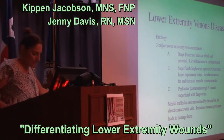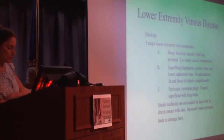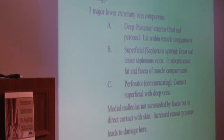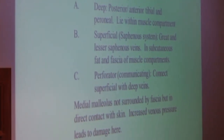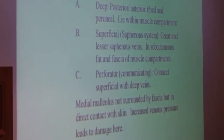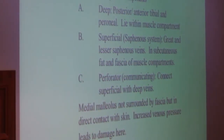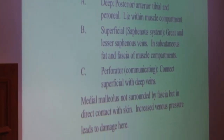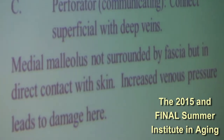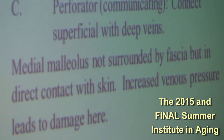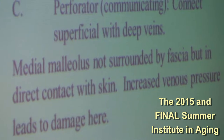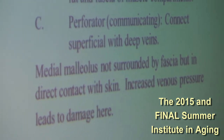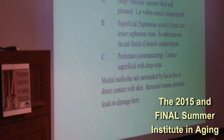The superficial or saphenous system, located within the subcutaneous tissues, collects from the skin and soft tissue, and this is a low pressure system. Then we have perforator or communicating veins — we have about 90 of these — and these connect the superficial and deep veins. Our typical venous ulceration occurs around the medial malleolus area, likely because the perforator veins there are not surrounded by fascia, so increased venous pressure and congestion can lead to damage in that area.